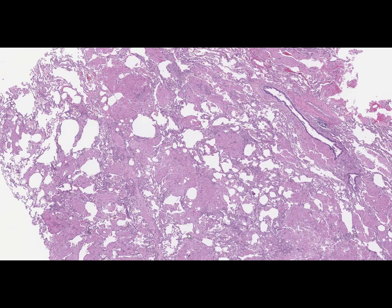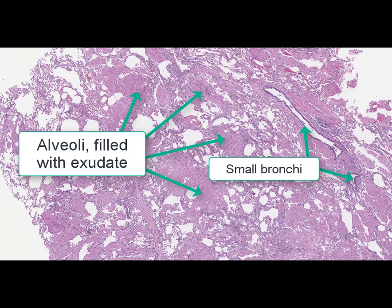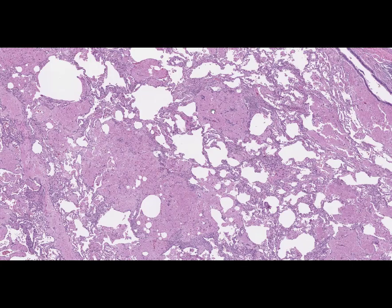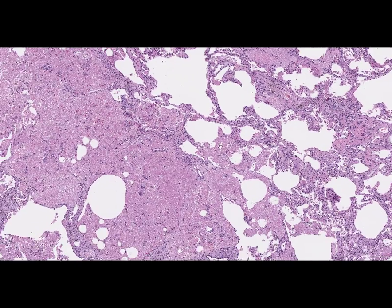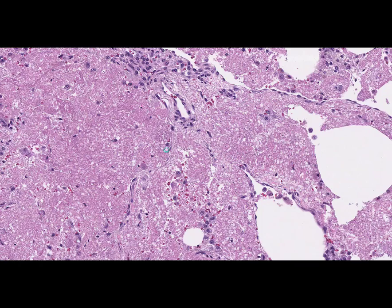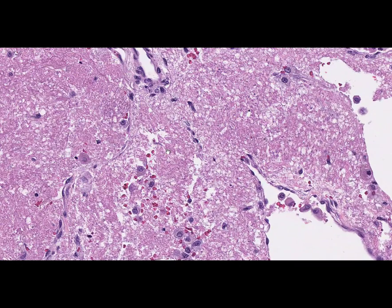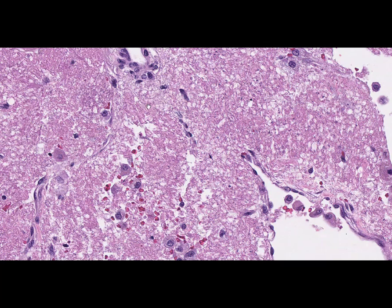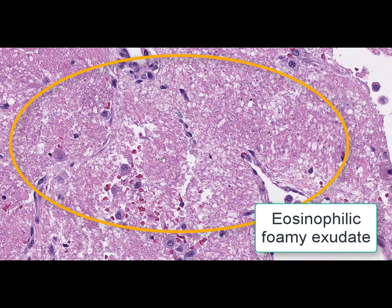At low magnification the lung tissue is non-homogeneous and most of the alveoli are filled with exudate. The nature and type of exudate observed at high magnification are typical for pneumocystic pneumonia. In the lumina of alveoli we can see an eosinophilic exudate with single blood cells and little fibrin. This exudate has a typical foamy appearance stipulated by the presence of a great amount of the pathogen Pneumocystis.